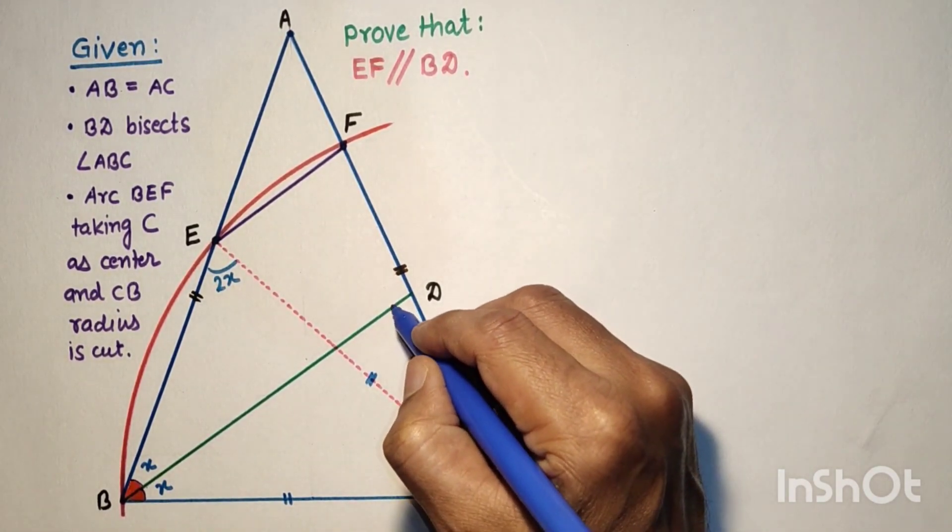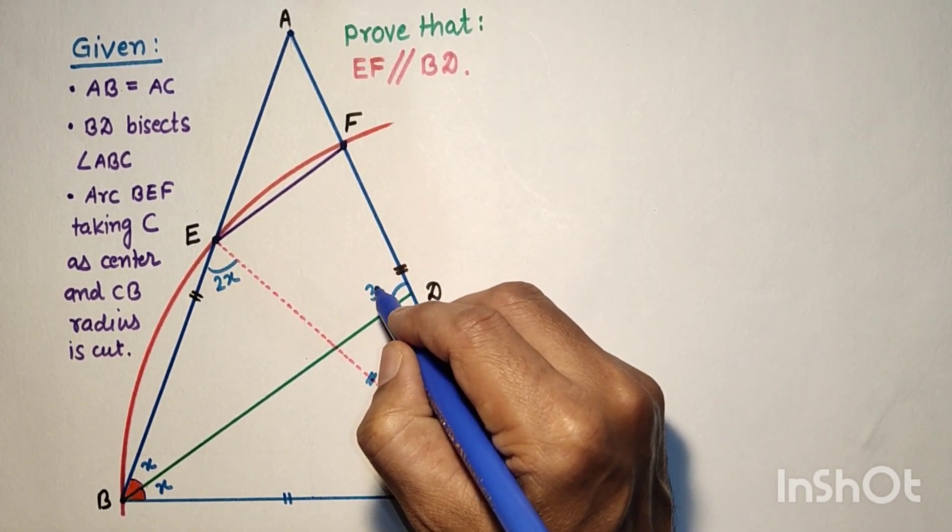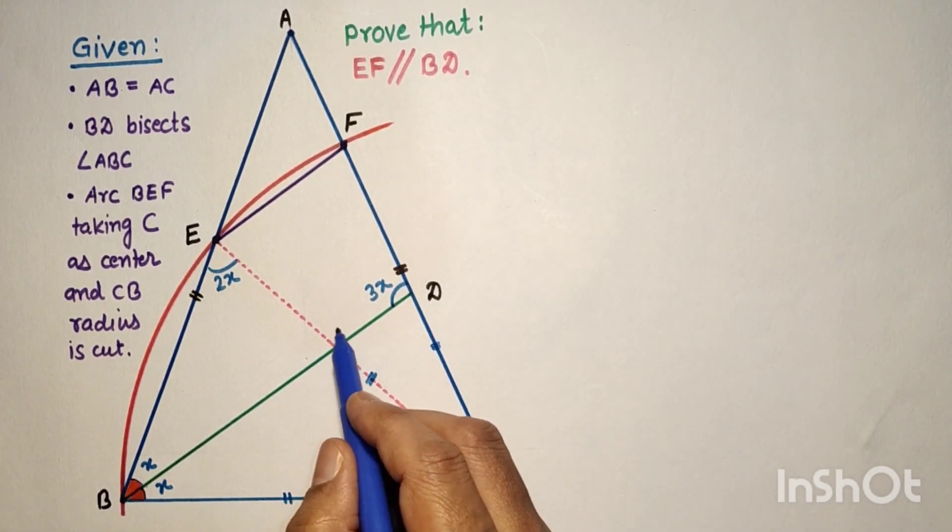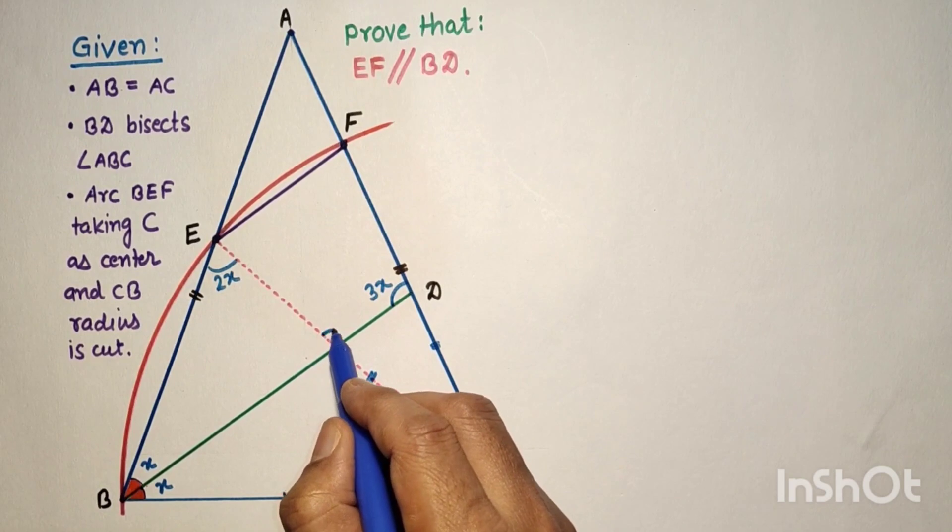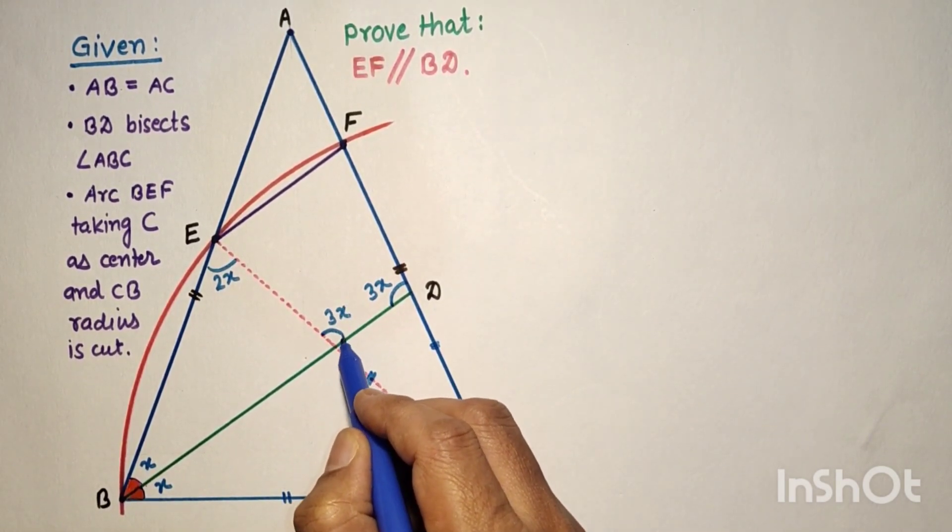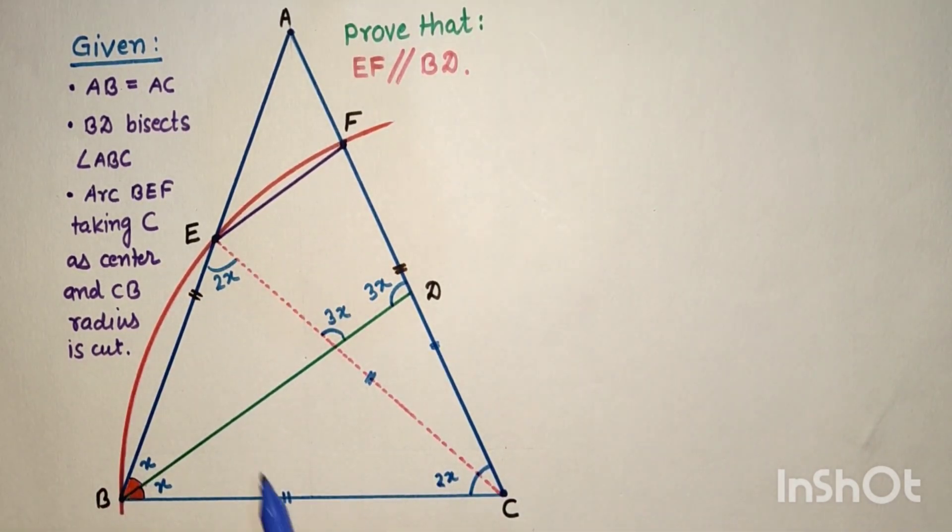Since this is X and this is 2X, then this exterior angle will be the sum of these two, so that is 3X. In the same way, this exterior angle is the sum of X and 2X, so this will also be 3X.